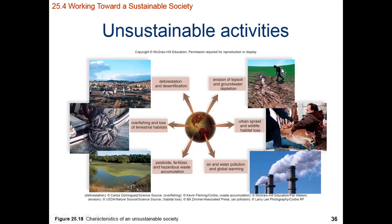There are many unsustainable activities that we need to cease right now: deforestation, loss of ground soil, urban sprawl encroaching on wildlife, air and water pollution, fertilizer buildup, and overfishing and overharvesting of both aquatic and terrestrial resources.